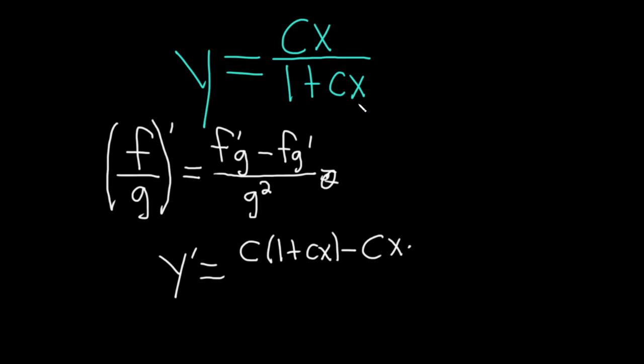The derivative of 1 is 0. The derivative of cx is c. All over the bottom one squared. So 1 plus cx and all of that is squared.